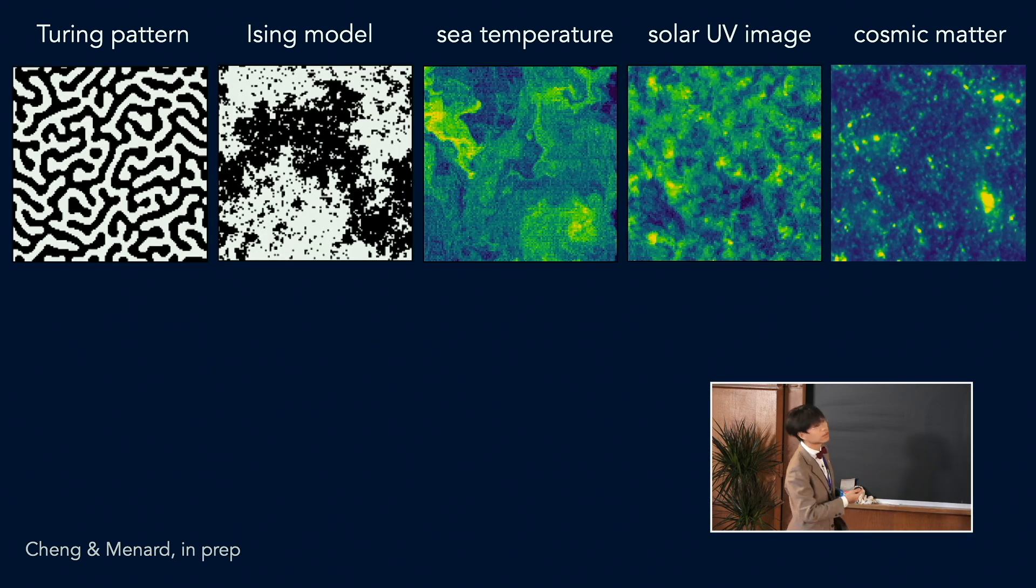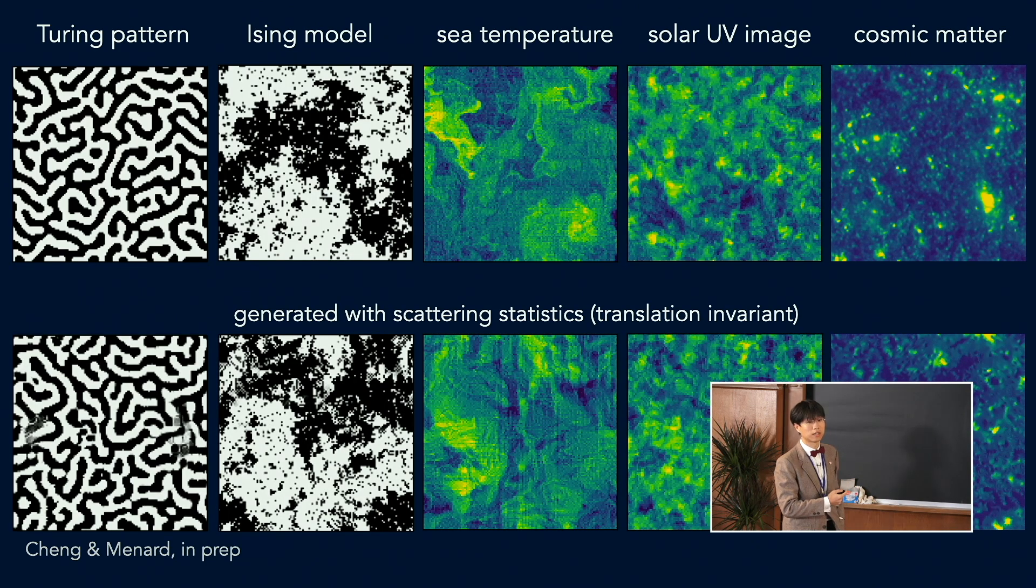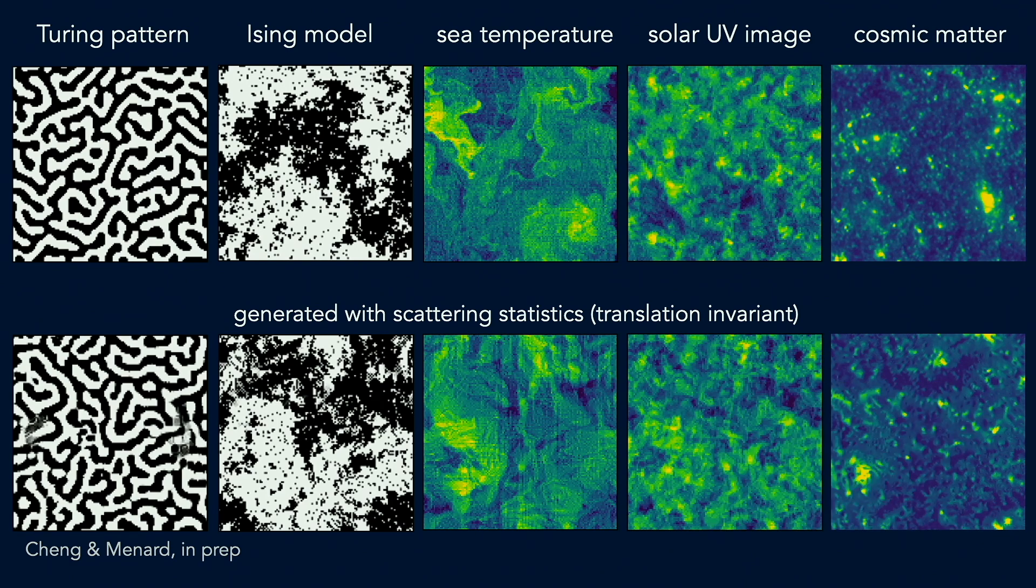And we did this experiment to very different physical fields. Here I'm showing five different physical fields. And we constantly find very impressive synthesis results. So the upper panels are input fields and the lower panels are examples of the randomly generating new images.